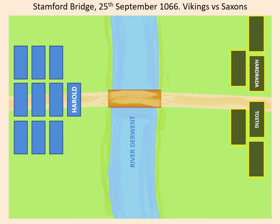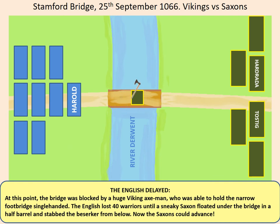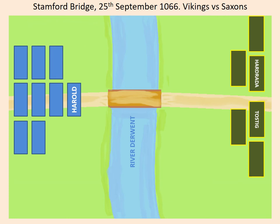But the English army had to get across that tiny bridge, and this was going to be more difficult than you'd expect. The English were delayed by a Viking axe man who was able to hold the narrow footbridge single-handedly. He was apparently a very large, very skilled warrior, who was able to go berserk with his famous Dane axe on the bridge. As the English tried to cross, never more than about three at a time, he was able to very easily deal with them. The English lost about 40 warriors until eventually a sneaky Saxon floated under the bridge in a half-barrel and stabbed the berserker from below. We can see an artist's impression of that event in the picture. Using this sneaky tactic, the Saxons had cleared the bridge and were now ready to advance across it.